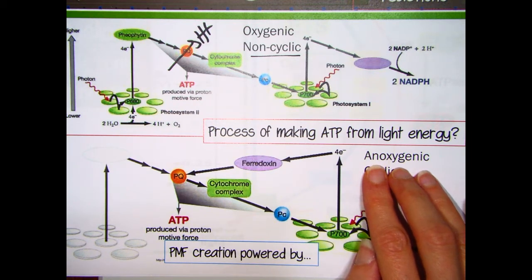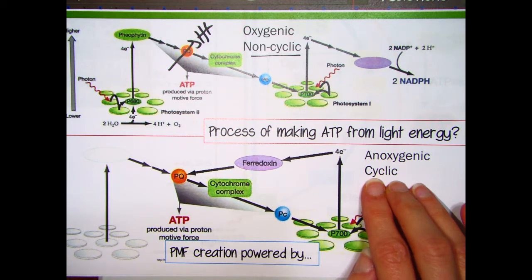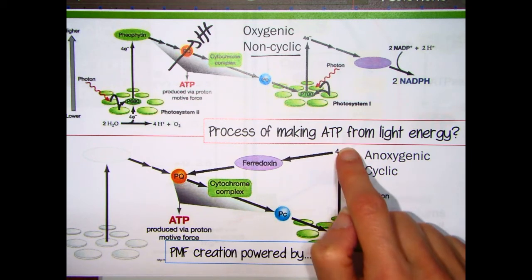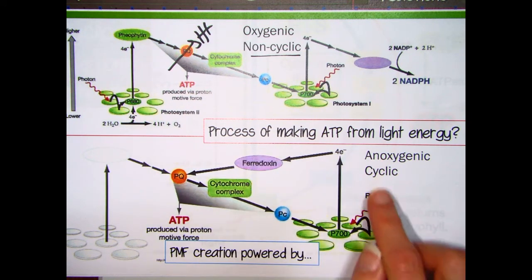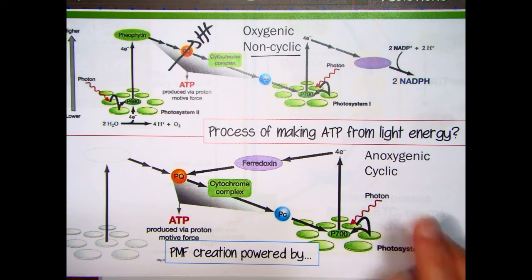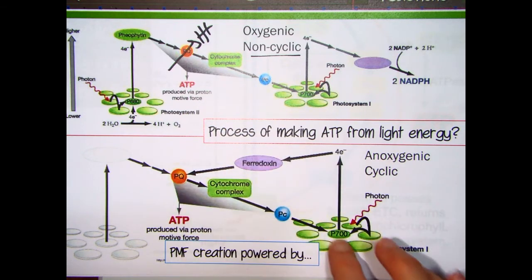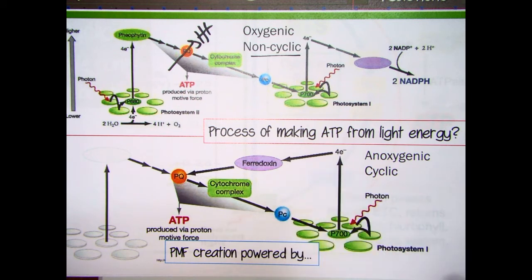Anoxygenic photosynthesis does not produce oxygen. This can be for one of two reasons. First, the process can be cyclic — the electron gets energized, goes through an electron transport chain, and comes straight back to the photosystem. There is no need for an external electron donor, no water is used, and so no oxygen is produced. Anoxygenic can also be acyclic — if the electron does not return to the photosystem, there is a second electron donor, but that electron donor is not water, so the waste product produced is still not oxygen.